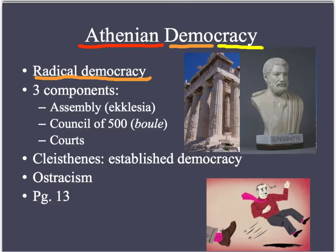The three components of democracy you need to know are the assembly, the Council of 500, and the courts. It was so important in Greece for people to be involved in the democratic process that our word 'idiot' actually comes from somebody who does not take interest in politics. A supposed quote from Pericles, a famous Greek, says: 'We do not say that a man who takes no interest in politics is a man who minds his own business. We say that he has no business here at all.'